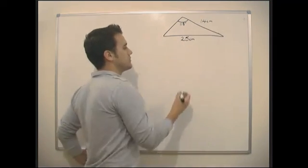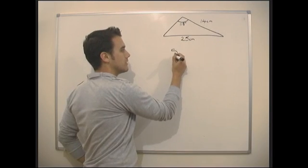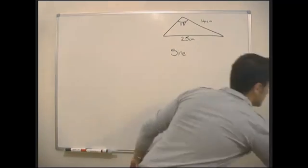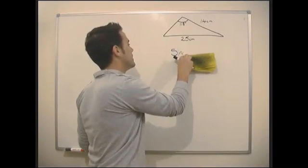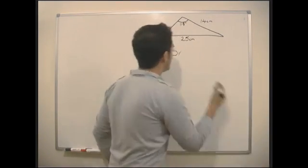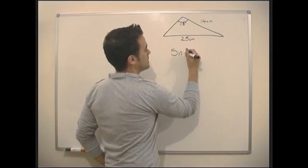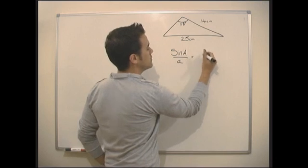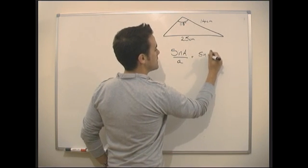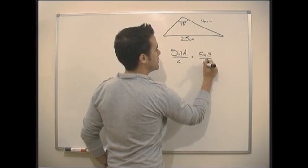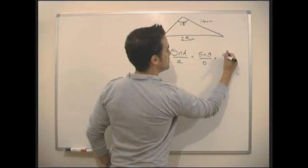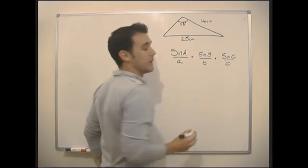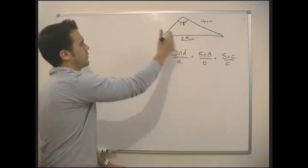So what we actually know from the sine rule. So the sine rule, here it is. Sine, we don't need the A on there, I don't know why I did the A. Right, so sine A divided by A equals sine B divided by B equals sine C divided by C. What do I mean by all this?